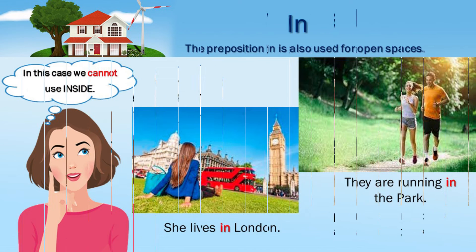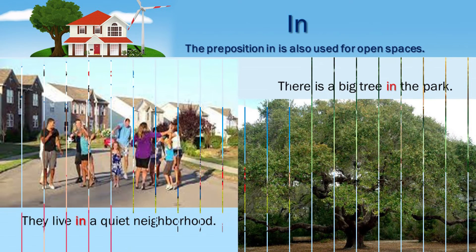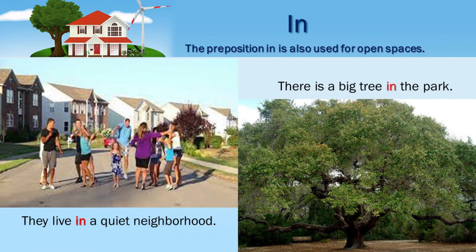The preposition 'in' is also used for open spaces. She lives in London. They are running in the park. They live in a quiet neighborhood. There is a big tree in the park.